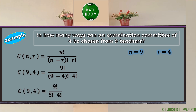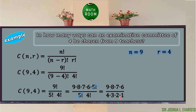Simplifying the equation: 9 − 4 = 5. We write 9! in the form of 9 × 8 × 7 × 6 × 5! so that we can cancel 5! in the numerator and denominator. We know that 4! = 4 × 3 × 2 × 1. The product of the numerator factors: 9 × 8 × 7 × 6 = 3,024, and 4 × 3 × 2 × 1 = 24. Last step: 3,024 ÷ 24 = 126. Thus, there are 126 ways an examination committee of 4 can be chosen from 9 teachers.